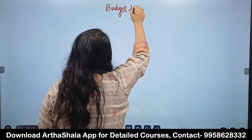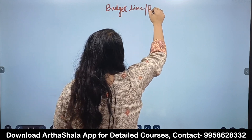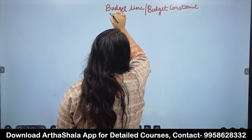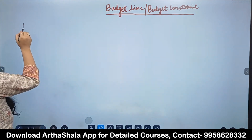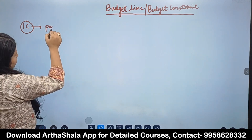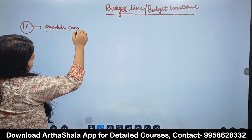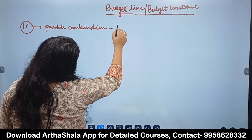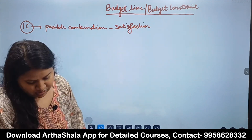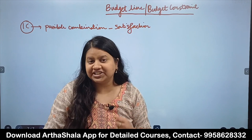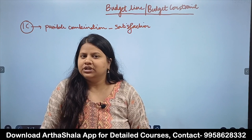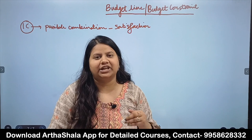Budget line, or we call it budget constraint. We have already studied IC (indifference curves). IC tells us about different possible combinations of goods that give the same satisfaction. Now, what is the need to understand budget line and budget constraints?